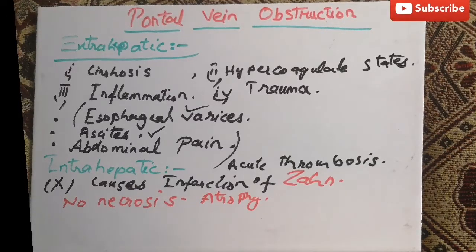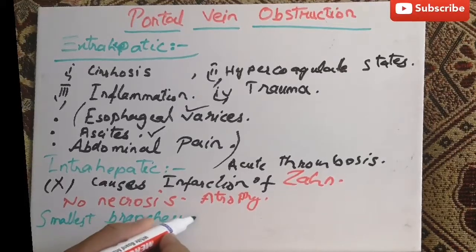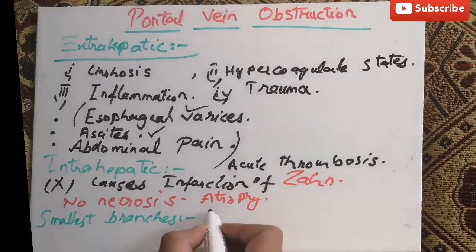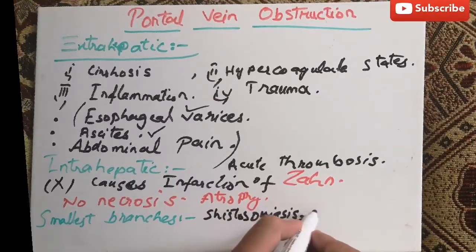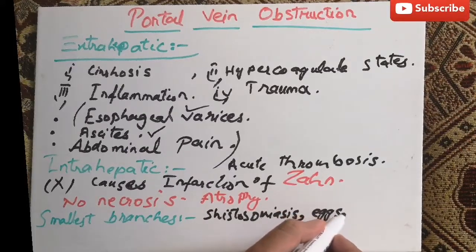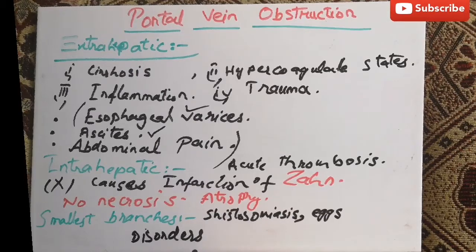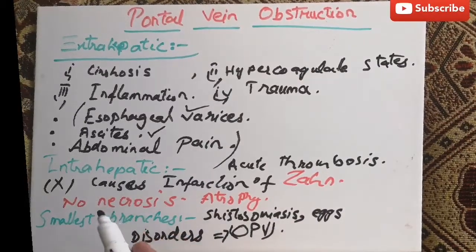The smallest portal vein branches can also be obstructed. The causes of their obstruction include schistosomiasis, in which the parasite lays eggs in these vessels and leads to their obstruction. Furthermore, there are several disorders collectively known as obliterative portal venopathy, which are responsible for obstruction of these branches of the portal vein.